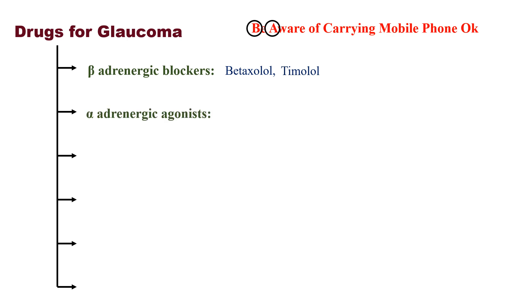A stands for alpha adrenergic agonists. Examples include adrenaline and apraclonidine.